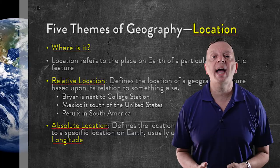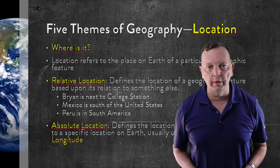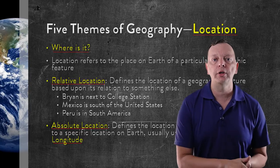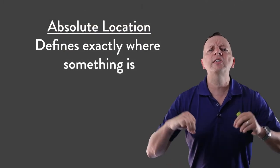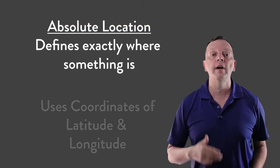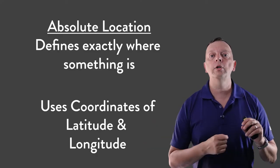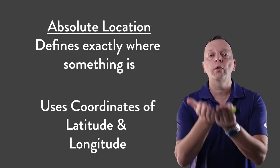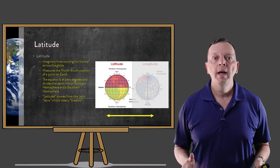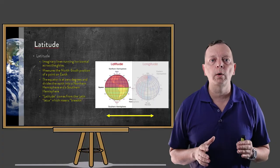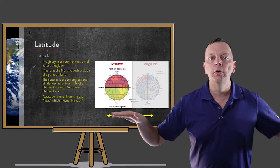The first theme is location, which asks: where is it? How do we know where somewhere is on the earth? Geographers can describe location as either an absolute or a relative location. An absolute location tells us exactly where something is using coordinates of latitude and longitude. Latitude and longitude are imaginary lines running across the globe to tell how far north and south you are, or east or west you are on the globe. Now the word latitude comes from the Latin word which means breadth. So latitude runs across the earth. Remember: latitude, flatitude.